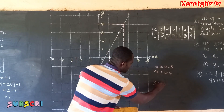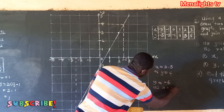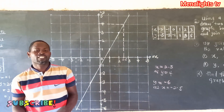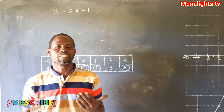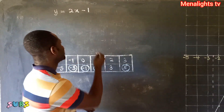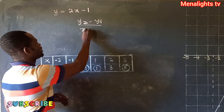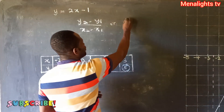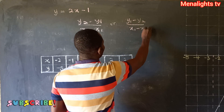For continuation, we need to find the gradient of the graph drawn. The gradient simply means the slope of the graph. To find the gradient, we use the formula: (y2 - y1) / (x2 - x1), or equivalently (y1 - y2) / (x1 - x2).